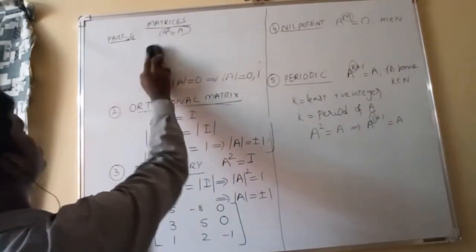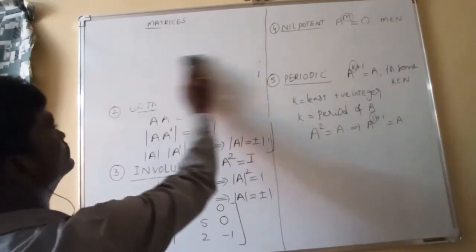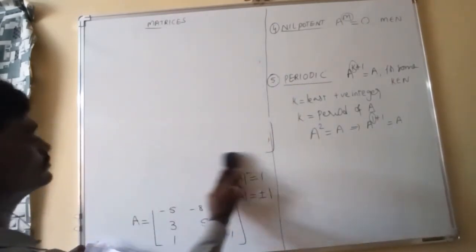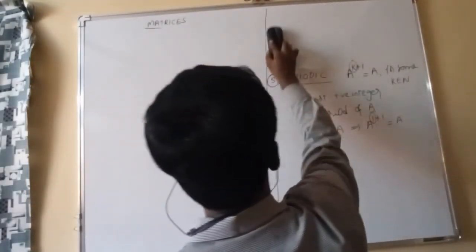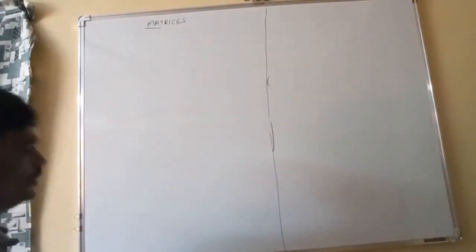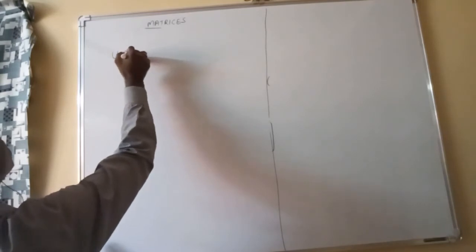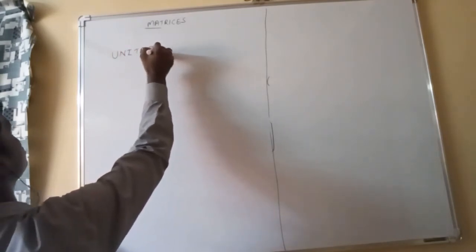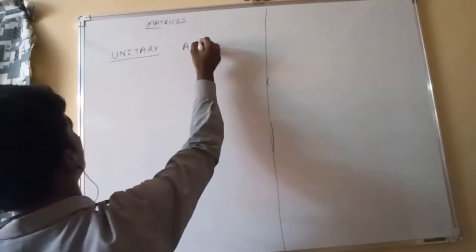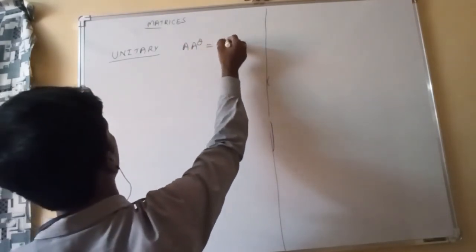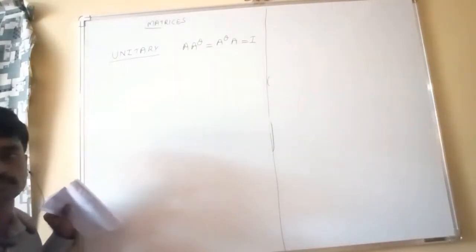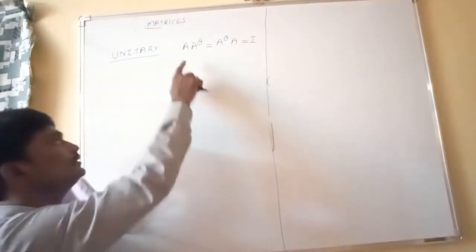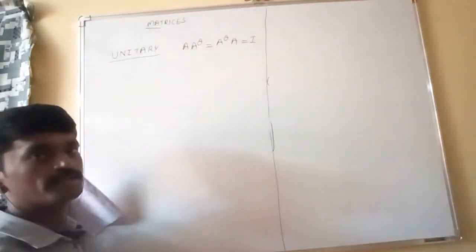Next definition: unitary matrix. A square matrix A is called a unitary matrix if A·A^θ = A^θ·A = I.